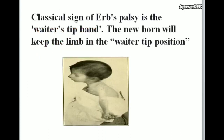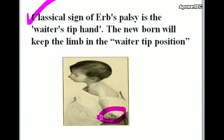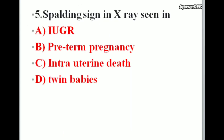Waiter's tip position is seen in Erb's palsy. The classical sign of Erb's palsy is the waiter's tip hand — the newborn will keep the limb in the waiter's tip position, like a waiter's hand when demanding a tip.